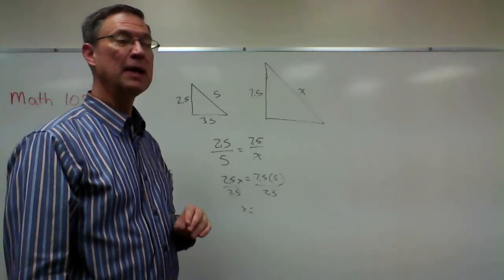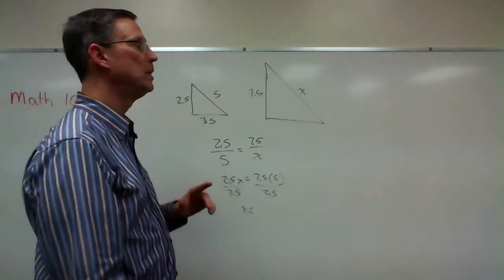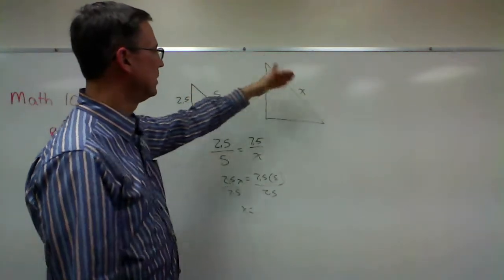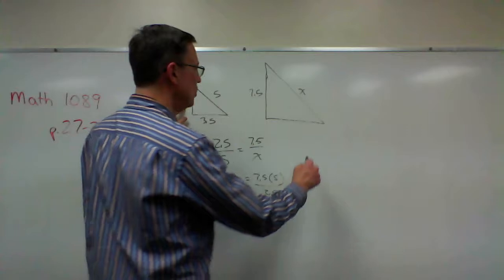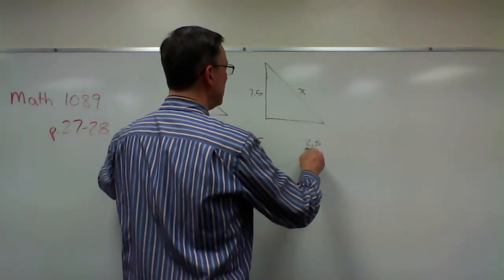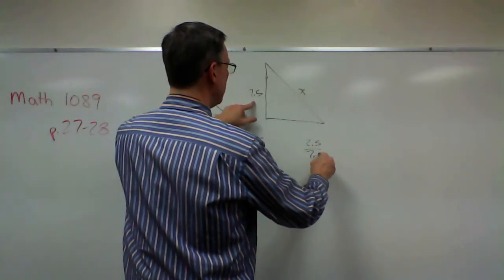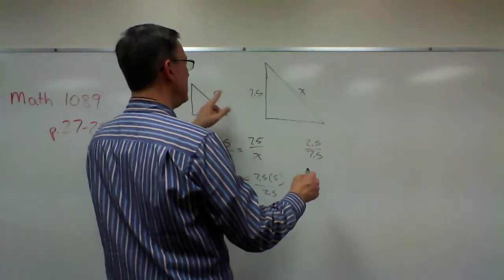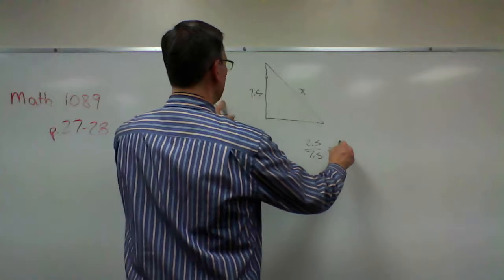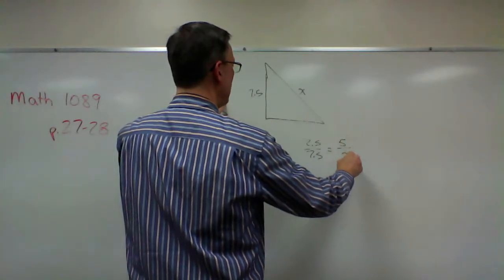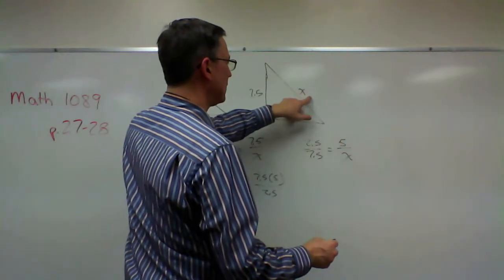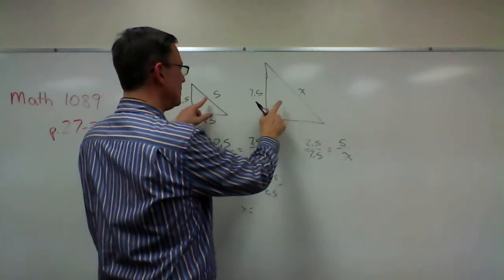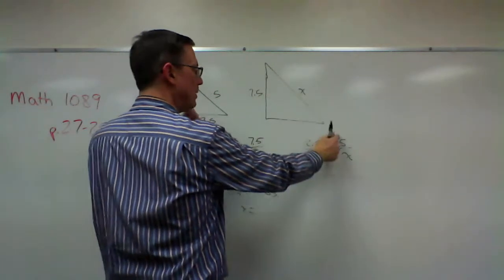Watch, I'm going to say the 2.5 is to 7.5, so I'm corresponding these two sides together, as 5 is to x. So I did short side is to short side as hypotenuse is to hypotenuse.